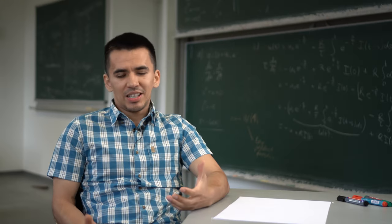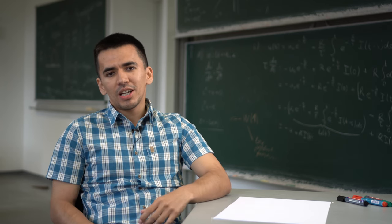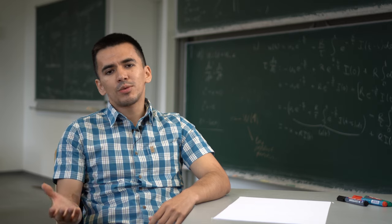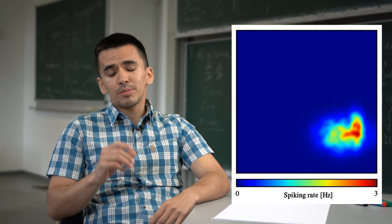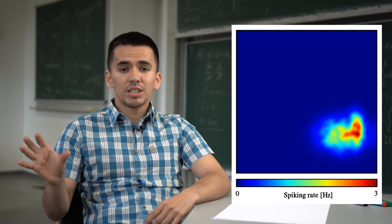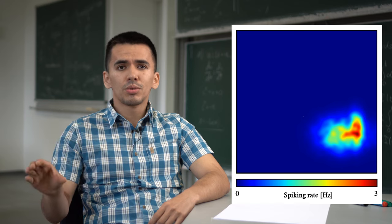We can illustrate the tuning of the place cell by showing a heat map where we plot the activity of the neuron at each location of the room and you can see that this heat map has only one bright spot. This is where the neuron is most active, so it is tuned to that location.